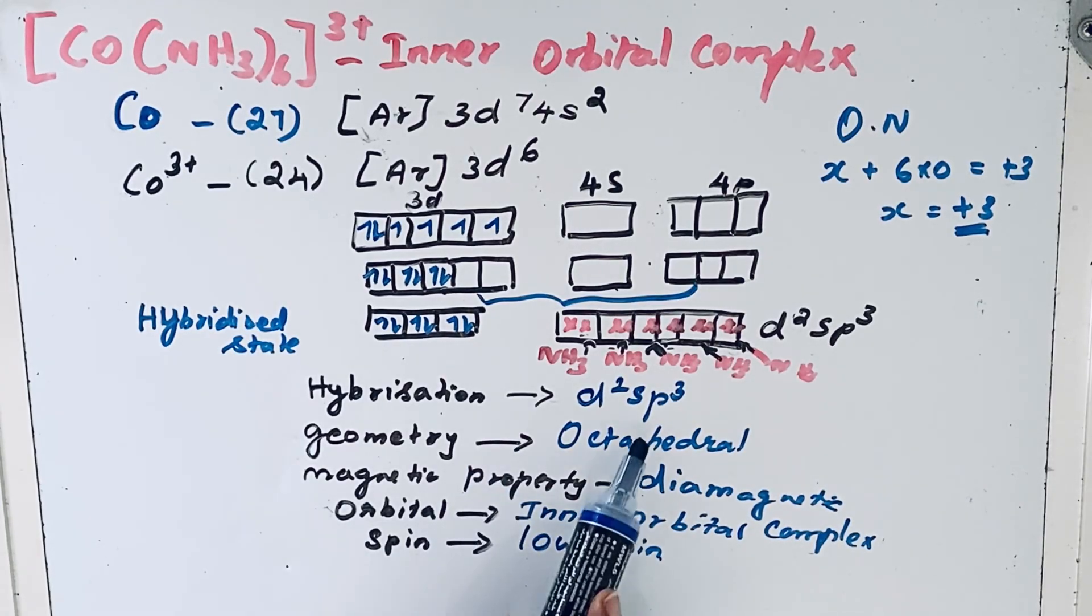So hybridization is d2sp3, geometry is octahedral, magnetic property is diamagnetic, orbital type is inner orbital complex, and the spin is low spin complex. Thanks for watching.